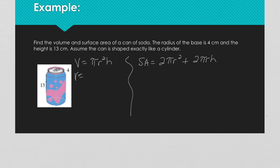For the volume: 3.14 times our radius — 4 — squared, times our height. Typing into the calculator: 3.14 times 4 squared times 13, and the volume is equal to 653.12 cubic centimeters.